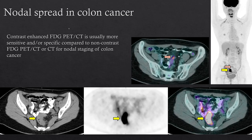Contrast-enhanced FDG PET-CT has been described as being more sensitive and/or more specific compared to non-contrast PET-CT or CT alone for nodal staging. In this patient, you can see an FDG-avid mass and focal uptake corresponding to a small node.